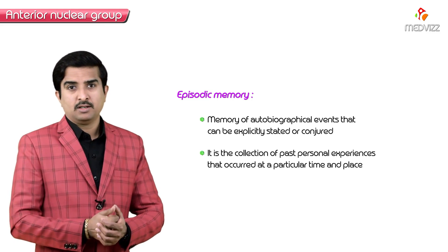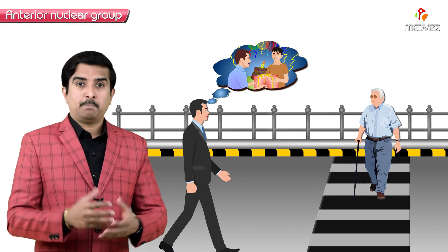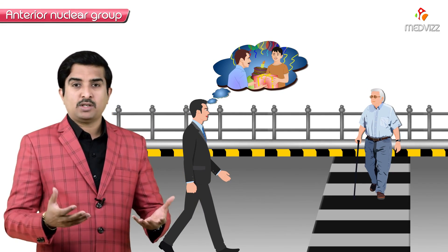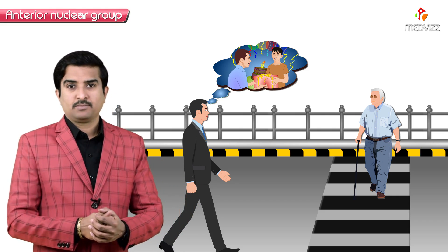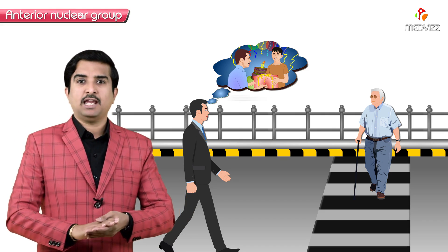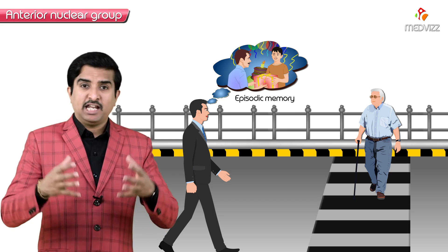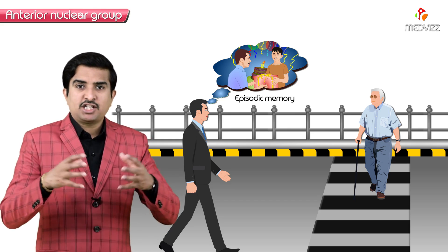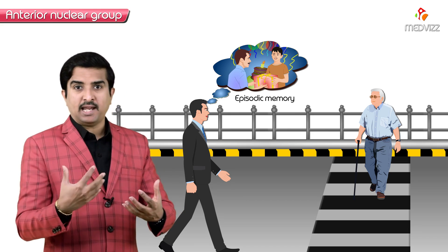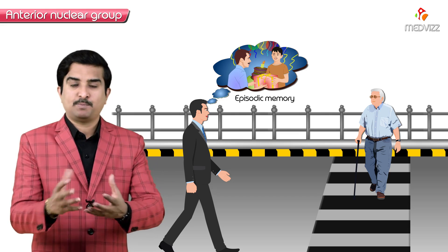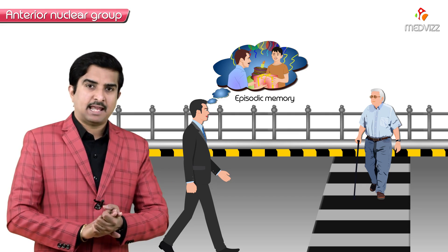For example, one can remember a party as well as the gifts received during their eighth birthday — this is an example of episodic memory. This kind of memory allows an individual to figuratively travel back in time and remember an event which took place at a particular time and space.